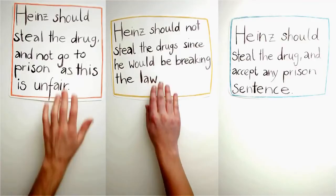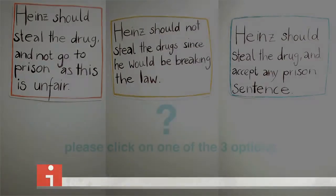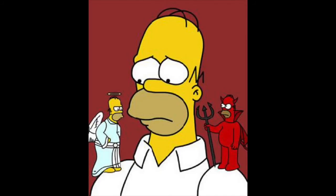Heinz should steal the drug and not go to prison, as this is unfair. Heinz should not steal the drugs, since he would be breaking the law. Or Heinz should steal the drugs and accept any prison sentence. From a theoretical point of view, it is not important what the participant thinks Heinz should do. Kohlberg's theory heeds the notion that the justification from the participant is what offers the most significance.